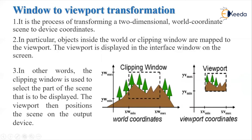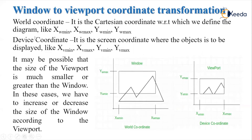In other words, the clipping window is used to select the part of the screen which is to be displayed. The viewport then positions the scene on the output device — we finally get the selected picture from the scene on the display device. The window to viewport coordination is defined with the help of some coordinates. Here, two types of coordinates are used: world coordinate and device coordinate. The window is in the world coordinate system and the viewport is in the device coordinate.